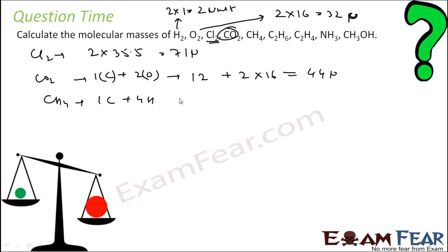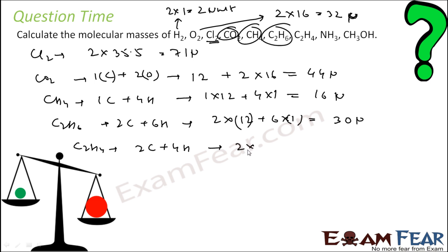Methane, CH4. One carbon plus four hydrogen. One carbon is one into 12. Four hydrogen is four into one. One hydrogen each is one unit. You solve this. 12 plus four, 16 units. C2H6. Two carbon plus six hydrogen. Two into one carbon is 12 units, so that's 24. Six into one is 6. And you solve this. You get 24 plus six, 30 units.